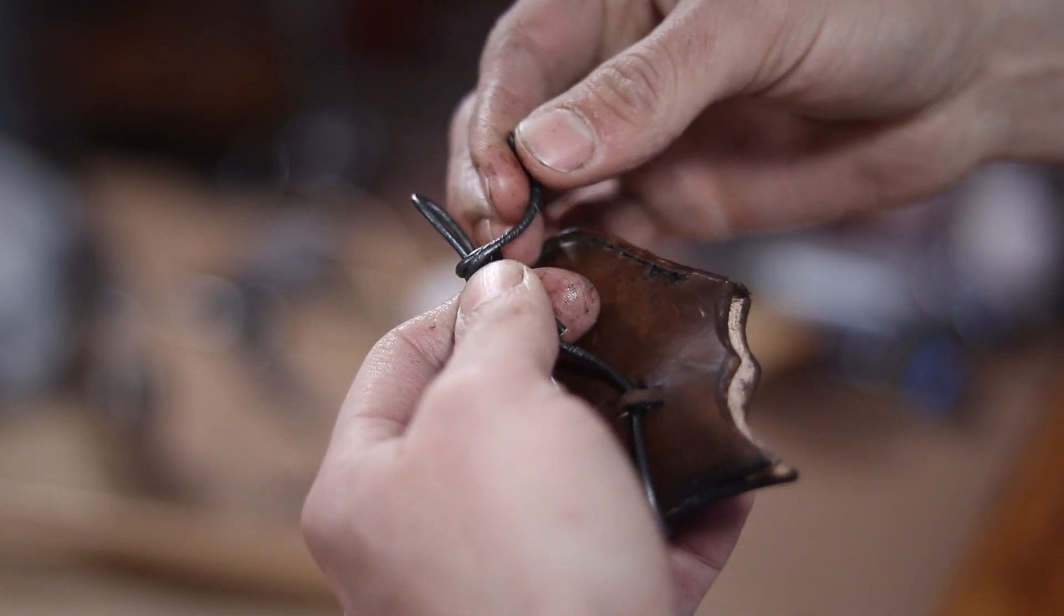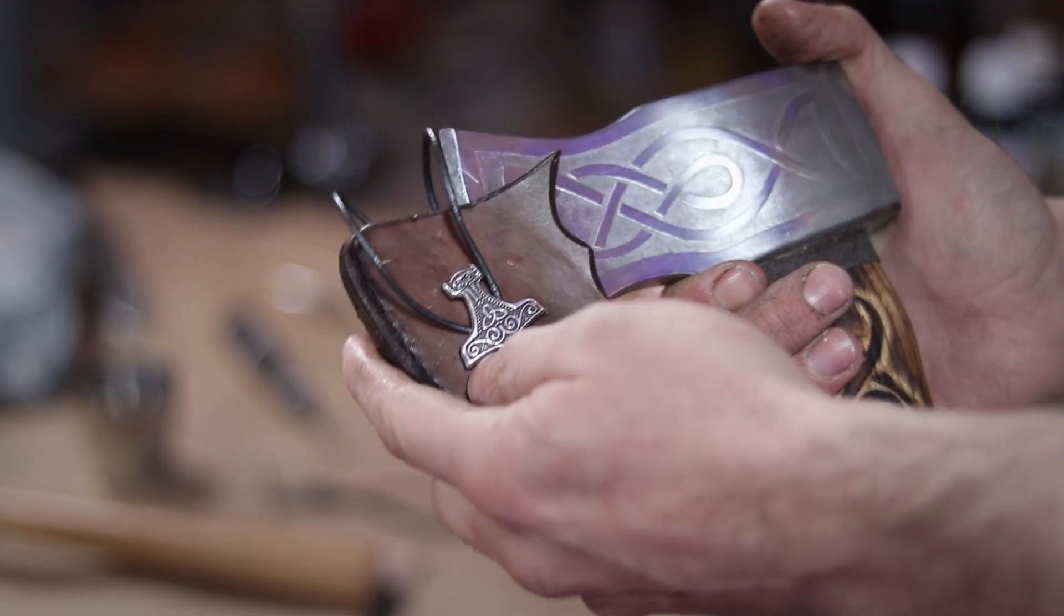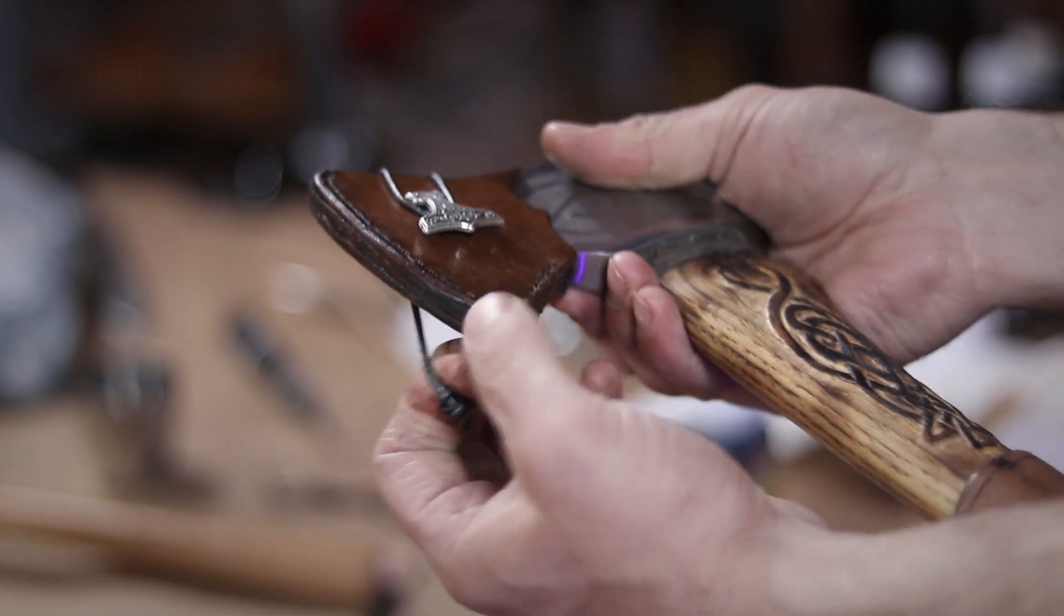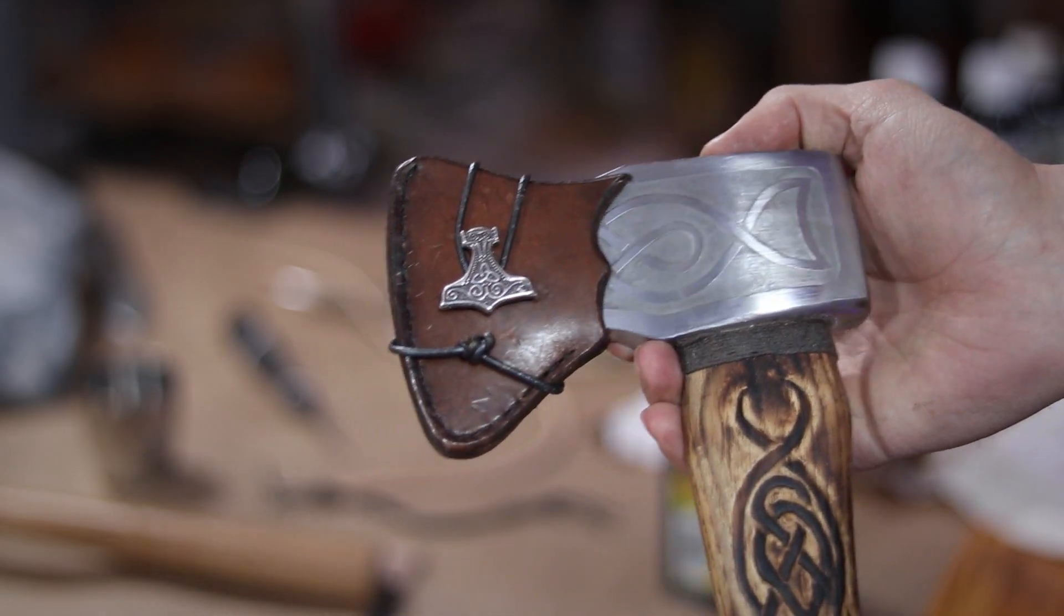Then I take the loose ends and tie them just into a little barrel knot. Now once the hatch is in place, all I have to do is pull that knotted end around the bottom, securing the mask to the axe.